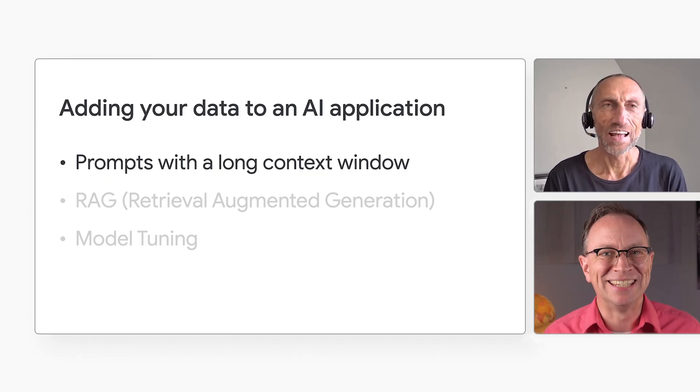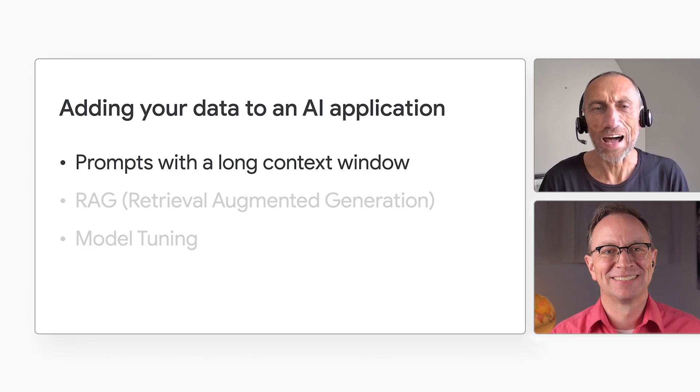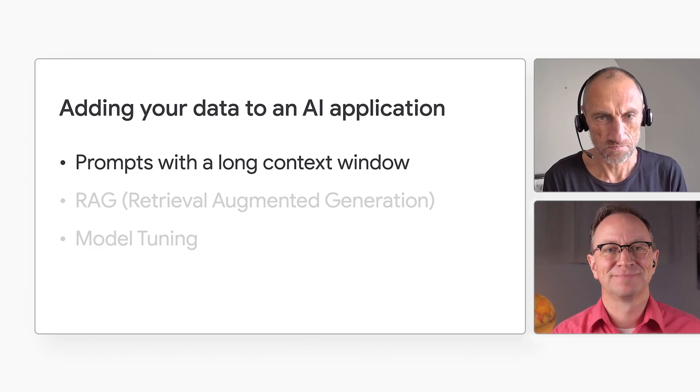What does that mean? It means that we put all our data in the prompt. Gemini 1.5 Pro has a context window of 2 million tokens, which means we can put a lot of data in the prompt. For example, that's enough to add the entire novel War and Peace from Leo Tolstoy. Wow, all of War and Peace — that's a lot.